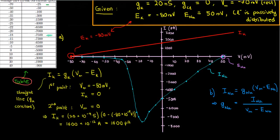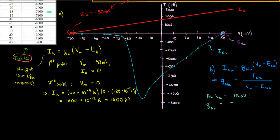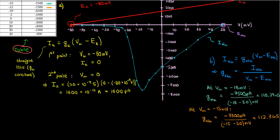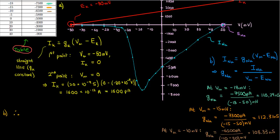At the voltage corresponding to the maximum current, negative 18 millivolts, we have a conductance of negative 7,500 picoamps over (negative 18 minus 50) millivolts, which is 110.29 nanosiemens. At the next voltage, we have a conductance of negative 7,300 picoamps over (negative 15 minus 50) millivolts, which is 112.31 nanosiemens — larger than at the maximum current point, mostly because the denominator has a smaller magnitude. Beyond this, conductances get smaller. So the maximum sodium conductance is 112.31 nanosiemens, occurring at negative 15 millivolts.